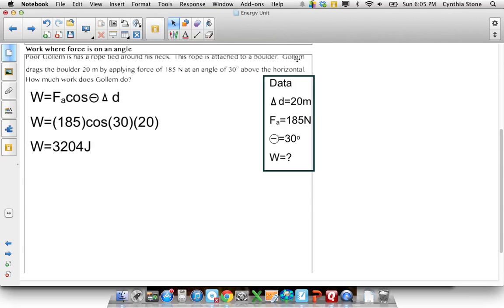Anyway, so in this question we have Gollum, he did not wear a jersey. He has a rope around his neck and he's dragging a boulder by this rope around his neck and he's got a force of 30 degrees above the horizontal. So there's the force, 185 Newtons, 20 meters he dragged it at that angle. So you just plug it in like this in your calculator, 185 times cos of 30 times 20.